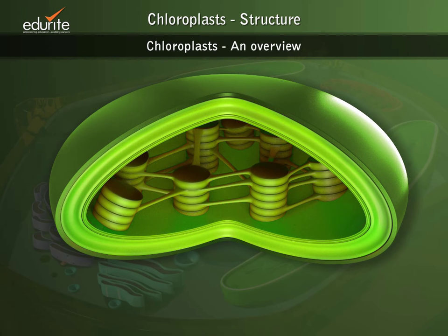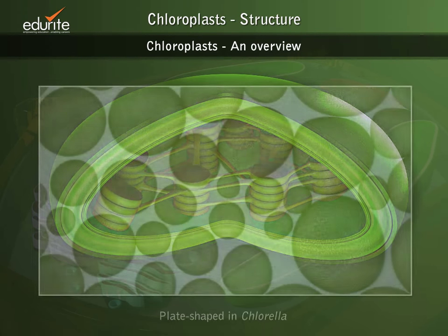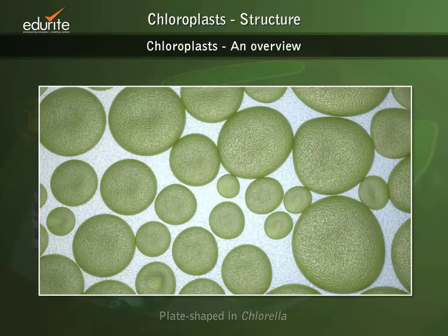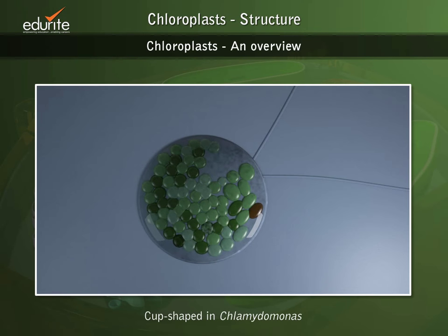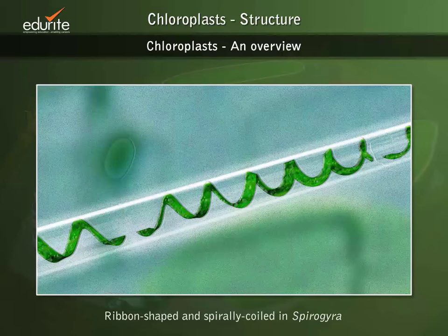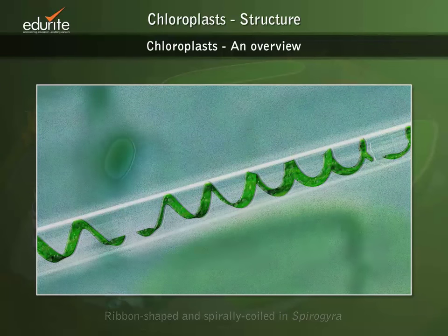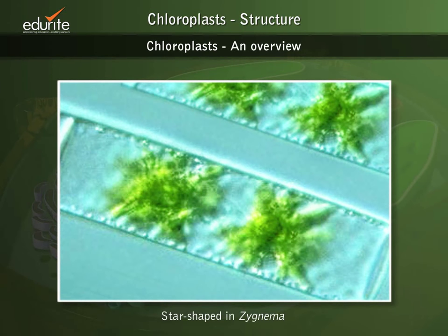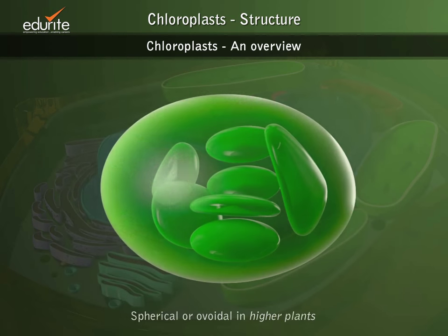Chloroplasts also differ in shape, being plate-shaped in Chlorella, cup-shaped in Chlamydomonas, ribbon-shaped and spirally-coiled in Spirogyra, and star-shaped in Zygnema. In higher plants, most chloroplasts are nearly spherical or ovoidal in shape.